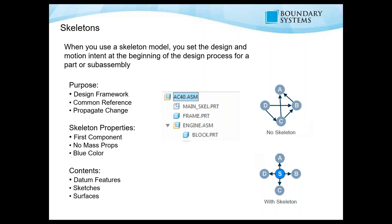With skeleton models, all of that goes away because you reference everything to the skeleton model. As soon as you change that, all the other things will update as well. Some properties of the skeleton model: it will always jump to the top of your model tree or the sub-assembly where you've added it. There's no mass properties and it's in a bluish color by default. You add datum features, sketches, and surfaces into that skeleton model. As soon as we jump into Creo, I'll show you how a skeleton model will react and how they normally look.